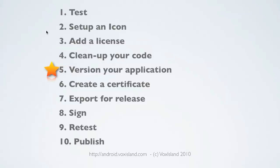Next, you're going to version your application. You will need a version code and a version name, set up in the manifest file. Google Market only cares about the version code — the version number — so you will need to increase it every time you release a version. The version name is really yours; you can do whatever you want with it.